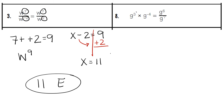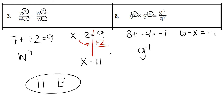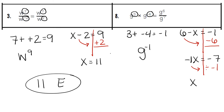For number 8, we're multiplying in the problem, so we add our exponents: 3 plus negative 4, which gives us a negative 1. G to the negative first power is our final answer. On the other side, we're dividing, so we subtract: 6 minus the unknown variable, and we want the answer to be negative 1. We do the opposite and subtract 6: negative 1 minus 6 gives us negative 7. In front of the x is still our minus sign, so we have an understood 1 in front of x — think of it as an imaginary 1. We divide by the negative 1, and two negatives make a positive, so our final answer is a positive 7. Our missing exponent is 7, represented by the letter S at the bottom.